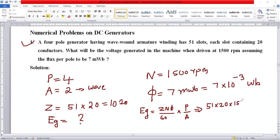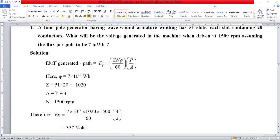N equals 1500 rpm, φ is 7 times 10 to the power minus 3, P equals 4, divided by 60, and A equals 2. Please substitute accordingly and get the answer. The answer for this particular problem is 357 volts. This is how to solve problems on DC generators.